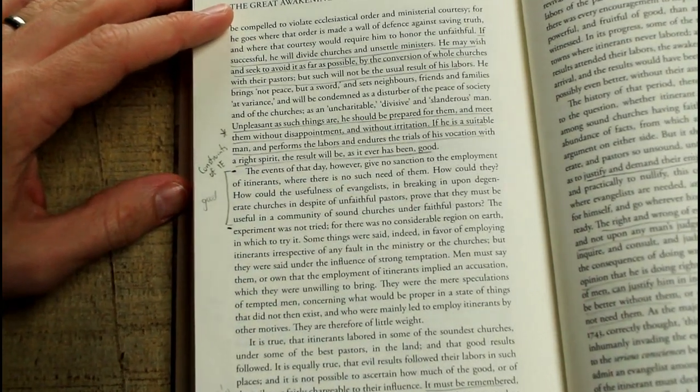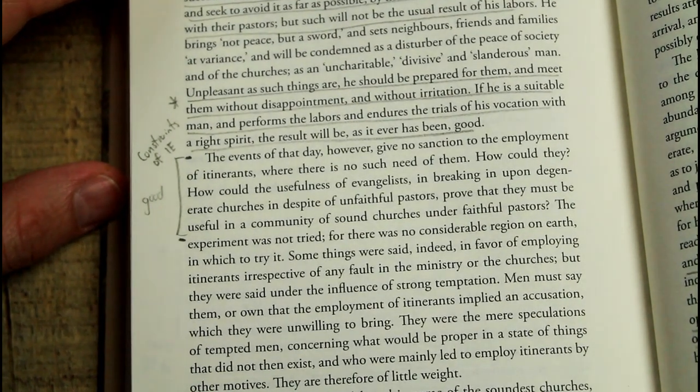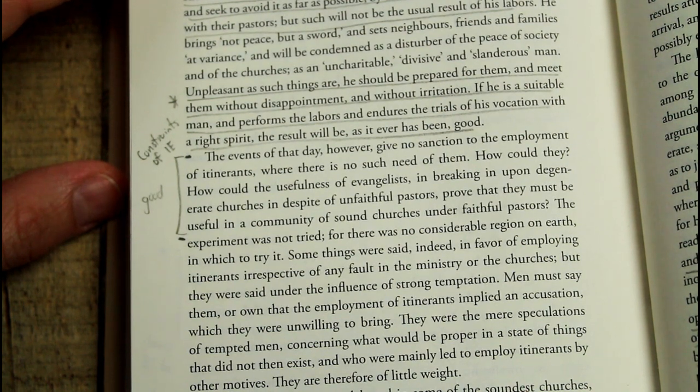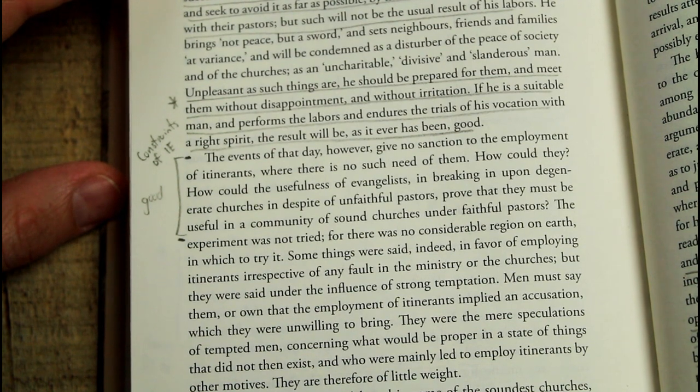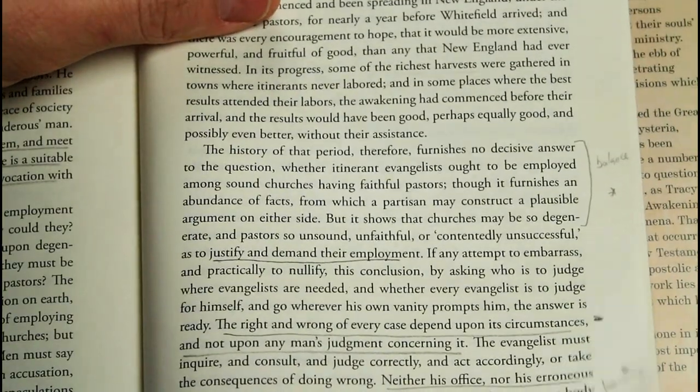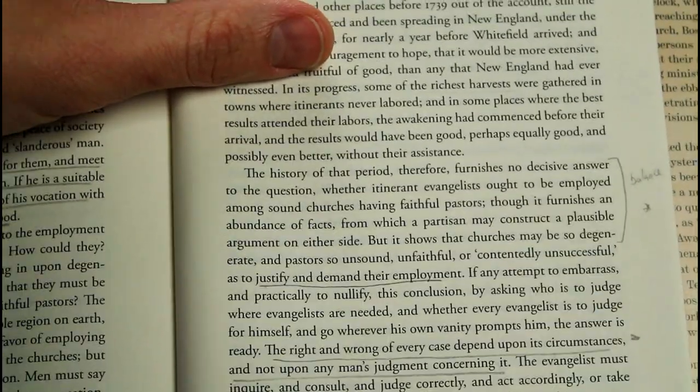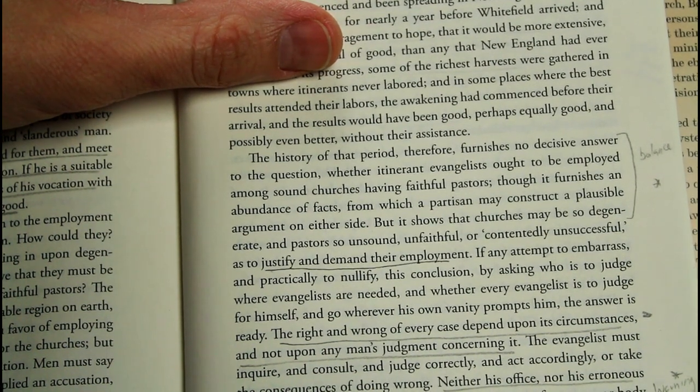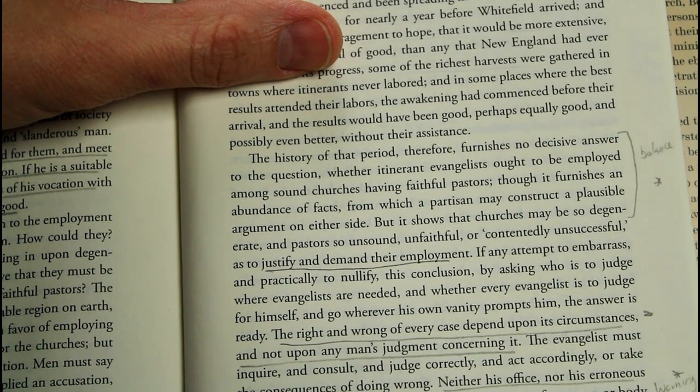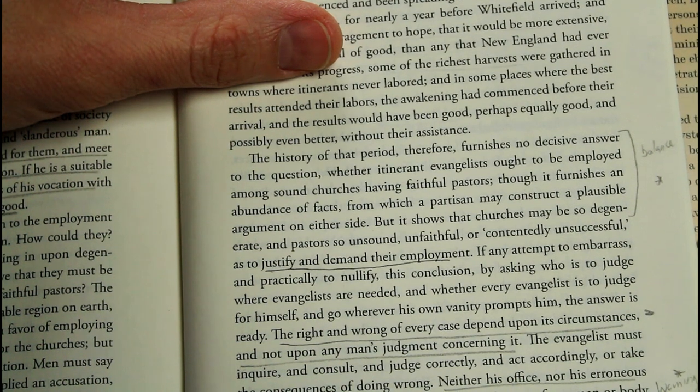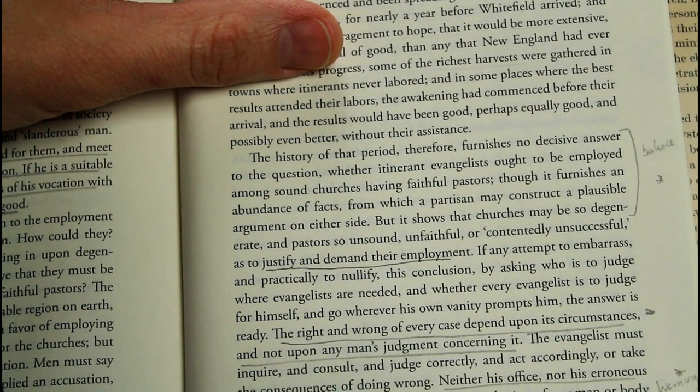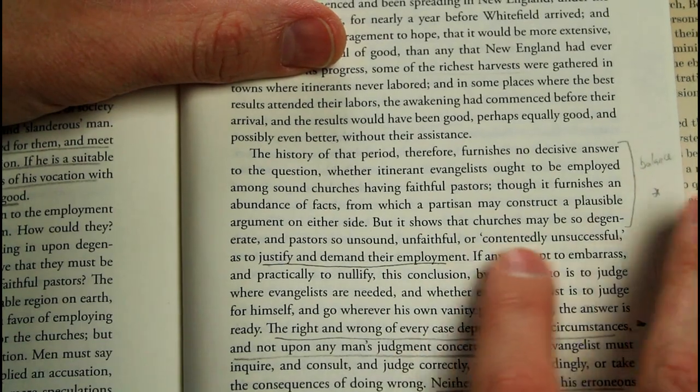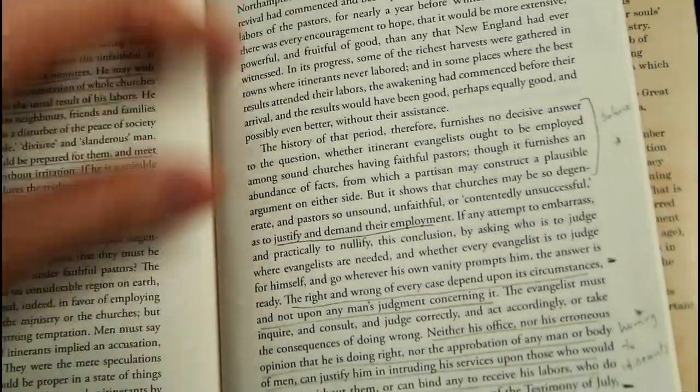How could they? How could the usefulness of evangelists in breaking in upon degenerate churches and despite of unfaithful pastors prove that they must be useful in a community of sound churches under faithful pastors? The history of that period therefore furnishes no decisive answer to the question whether itinerant evangelists ought to be employed among sound churches having faithful pastors, though it furnishes an abundance of facts from which a partisan may construct a plausible argument on either side. But it shows that churches may be so degenerate and pastors so unsound, unfaithful, or contentedly unsuccessful as to justify and demand their employment. What he means by contentedly unsuccessful, I'm not 100% sure. You'll have to, I guess, read the book to figure that out.